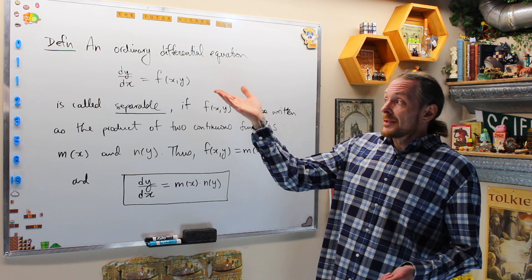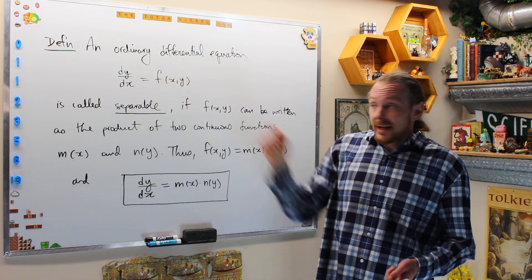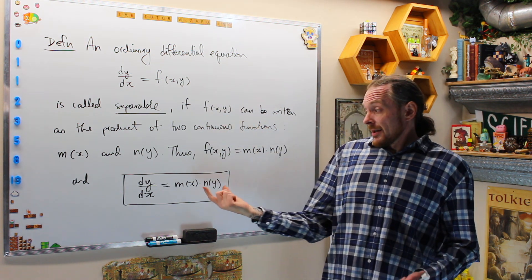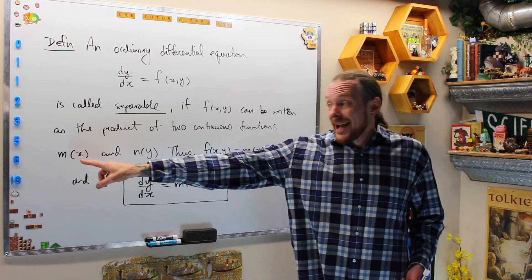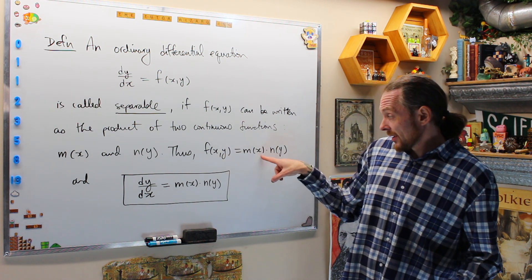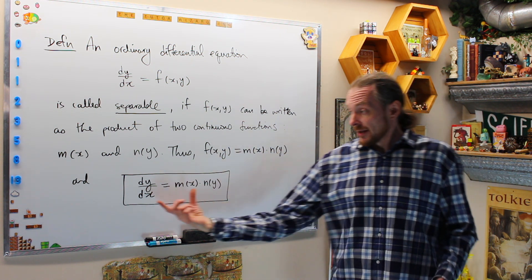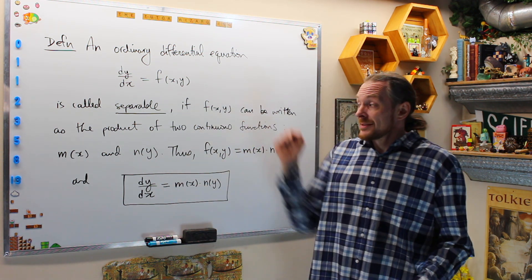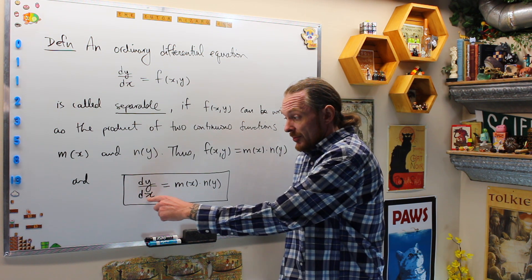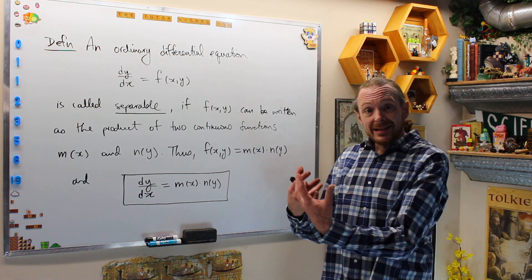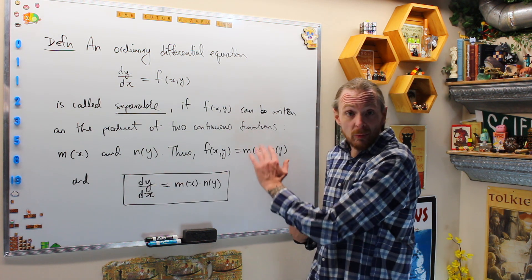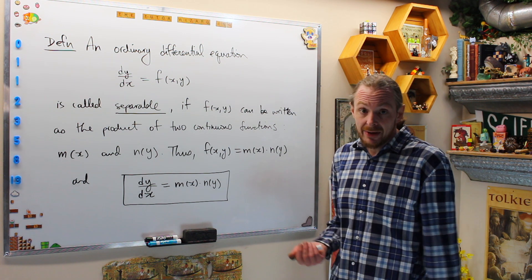What is the definition of separable? A differential equation dy/dx = f(x,y) is called separable if we can write this function of two variables as the product of a function of just x — m(x) — and a function of just y — n(y). So f(x,y) can be written as m(x) times n(y), and our differential equation will look like this. The idea of why it's called separable is that, as long as n(y) is not zero, we can divide by it, bring the differential up, integrate both sides, and separate the variables — y's and dy on one side, x's and dx on the other — using the equal sign.